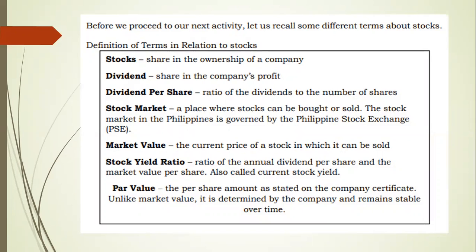Market value is the current price of a stock in which it can be sold. Stock yield ratio is the ratio of the annual dividend per share and the market value per share, also called current stock yield. Par value is the per share amount as stated on the company's certificate. Unlike market value, it is determined by the company and remains stable over time.